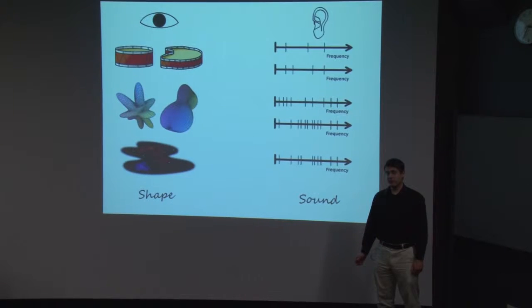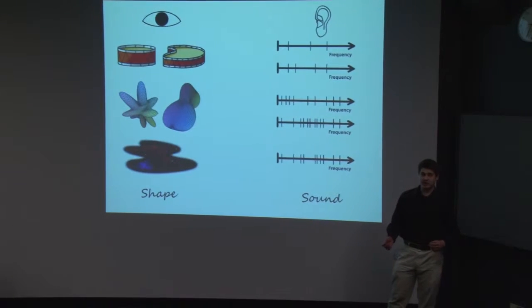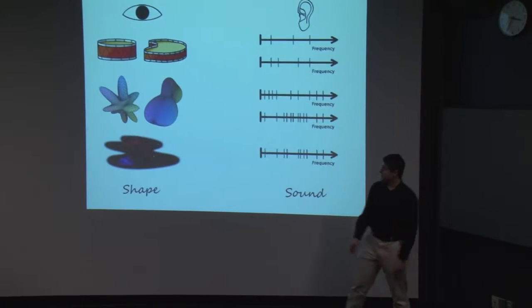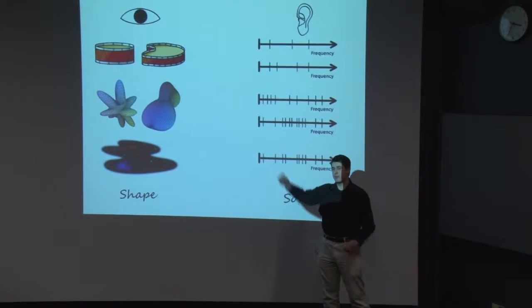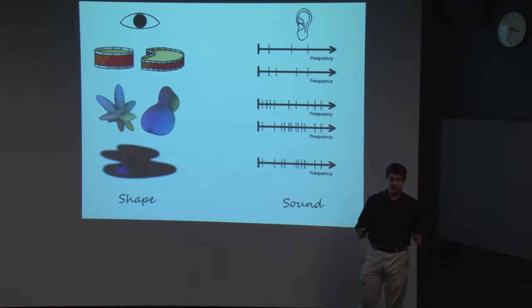The question of inverse spectral geometry is, can one deduce the shape of an object from the sound this object makes? For instance, imagine that I have an unusually shaped drum. Would you be able to guess its shape simply from its sound without even seeing the drum?